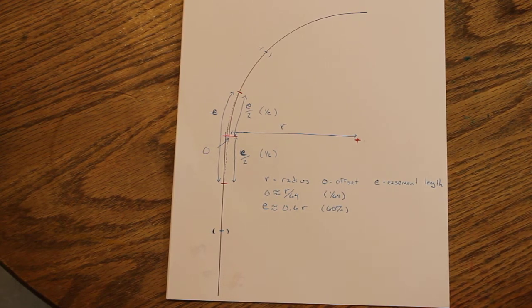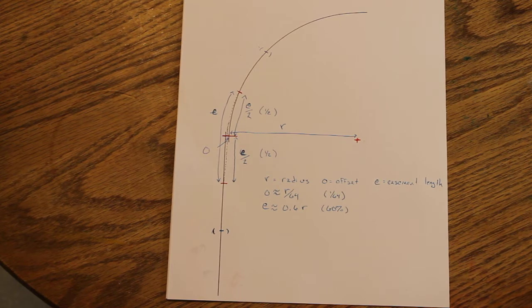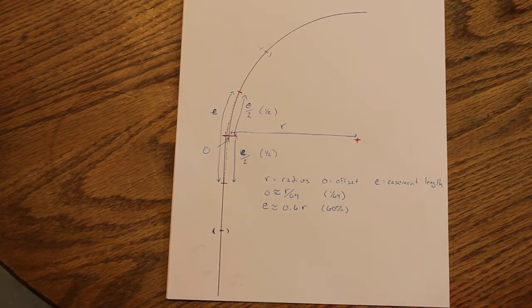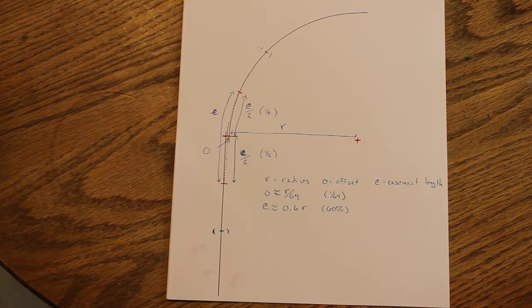I made a mistake in the mathematical formula that I want to correct. This wouldn't be a catastrophic mistake. In fact, if anything, it would make your easements too big and maybe more gentle than you need them to be, but also would take more space.